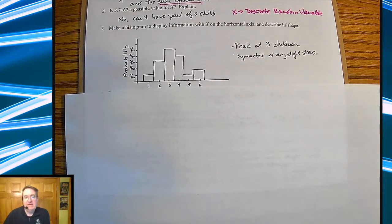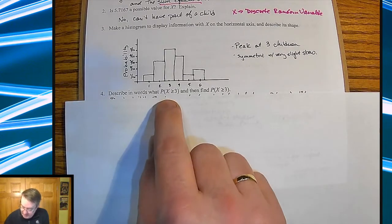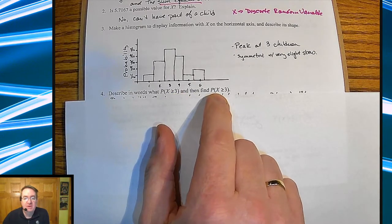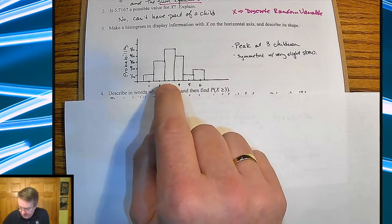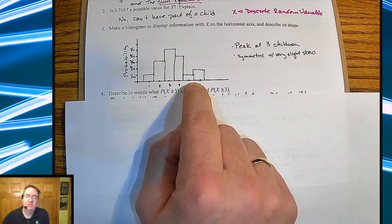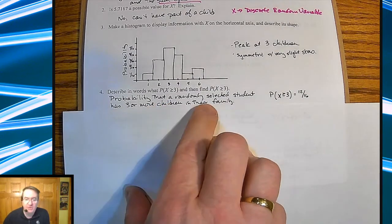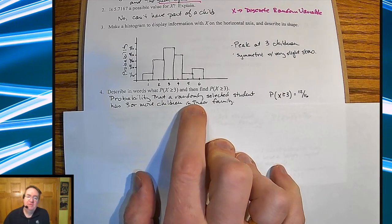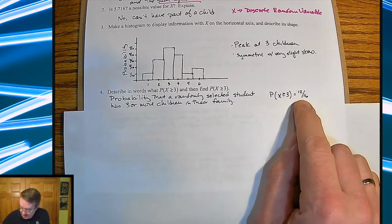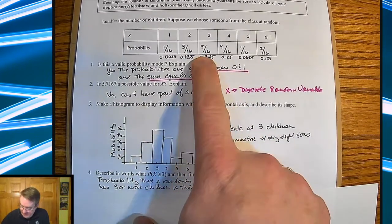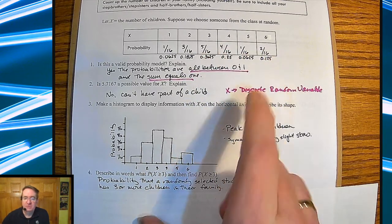Now for a couple of key points. They're going to ask you to describe in words what P(X ≥ 3) means, and then find what P(X ≥ 3) is. Most kids instinctively say that's going to be the probability of having three or four or five or six children at home — the probability that a randomly selected student has three or more children in the family. The verbiage here is important. So in this case we get 12 out of 16, because we are adding up 5/16 and 4/16 and 1/16 and 2/16 — so 5, 9, 10, 12 — that's 12 out of 16.